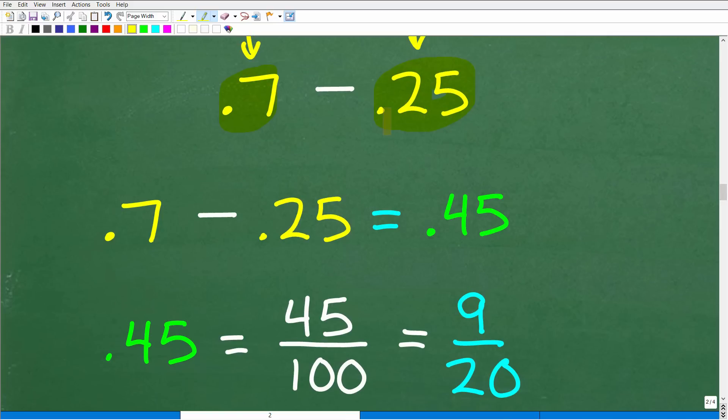0.7 minus 0.25, which is 0.45. So this is a good answer, but let's suppose you wanted to express this as a fraction. 0.45 is the same thing as 45 hundredths. This is all place value stuff you need to remember. 4 is in the tenths place, 5 is in the hundredths place. So we can express this decimal, 0.45, as 45 over 100.